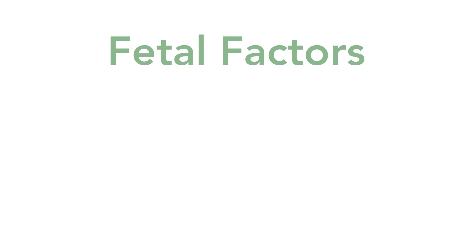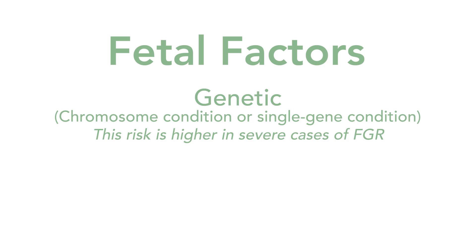A third cause of fetal growth restriction is differences in the fetus, and this may include a genetic difference. A genetic difference can be due to a chromosome condition, such as a missing or extra piece of a chromosome, or a genetic condition due to a spelling change within a single gene. There is approximately a 6 percent chance for an underlying chromosome condition in a fetus with isolated growth restriction, meaning there is no difference seen in the fetal anatomy. This also means there is up to a 94 percent chance for no chromosome condition causing the fetal growth restriction. In the setting of severe fetal growth restriction, identified earlier in pregnancy, the risk of a genetic or chromosome condition can be higher.